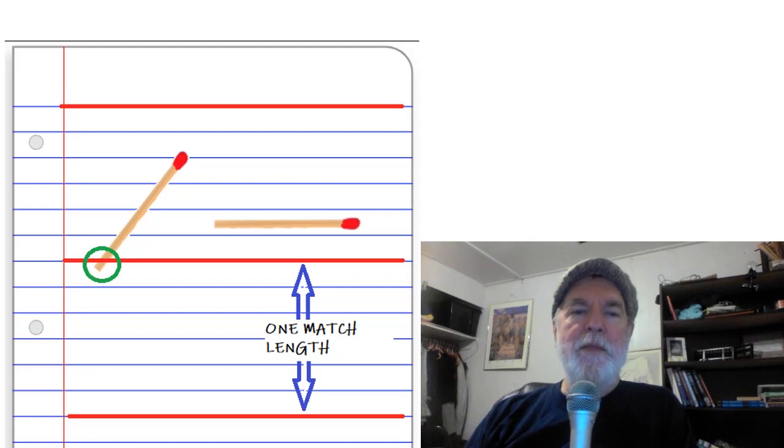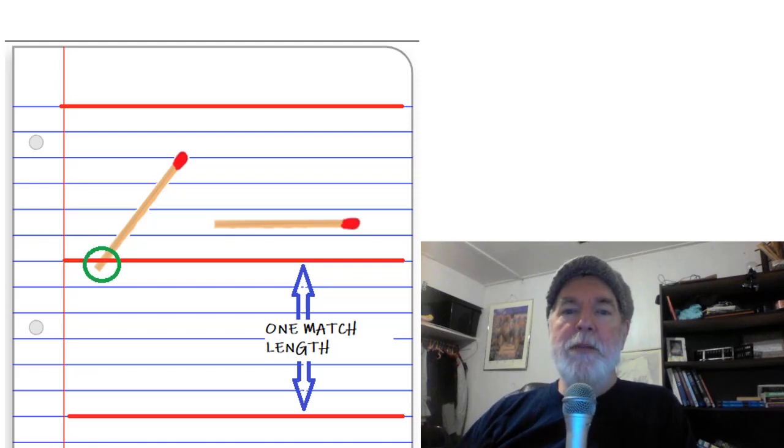Okay, now you're going to count the number of matches that cross one of the marked lines, and each time it does that we call that a hit. The more times you do this, the better approximation you're going to get.